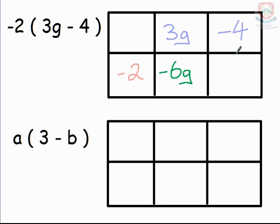In the next cell we have negative 2 times negative 4. Well 2 times 4 is 8. Negative times negative is positive. So my answer for this when fully expanded can be written as negative 6g plus 8.